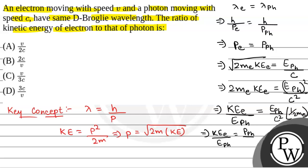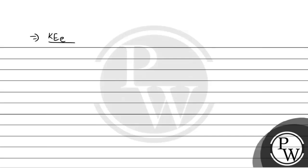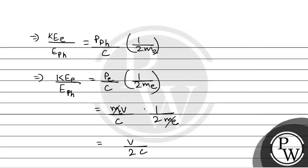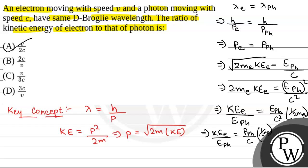This simplifies to momentum of photon by C times 1 over 2 mass of electron. Since momentum of photon equals mass of electron times velocity, the mass of electron cancels out, giving us V by 2C. So the correct option is option A: V by 2C.